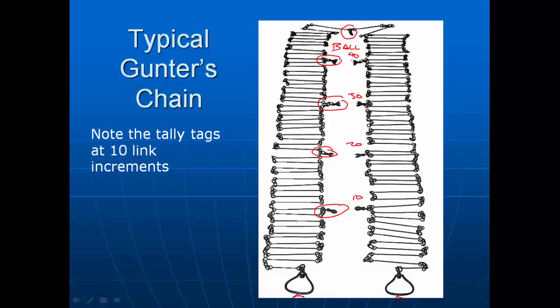To measure in links — say four chains and twelve links — the chaining crew would have to keep track of which tag they had just noticed and then count individual links. It's easy to miscount, and that was a common error source in the use of the Gunter's chain.